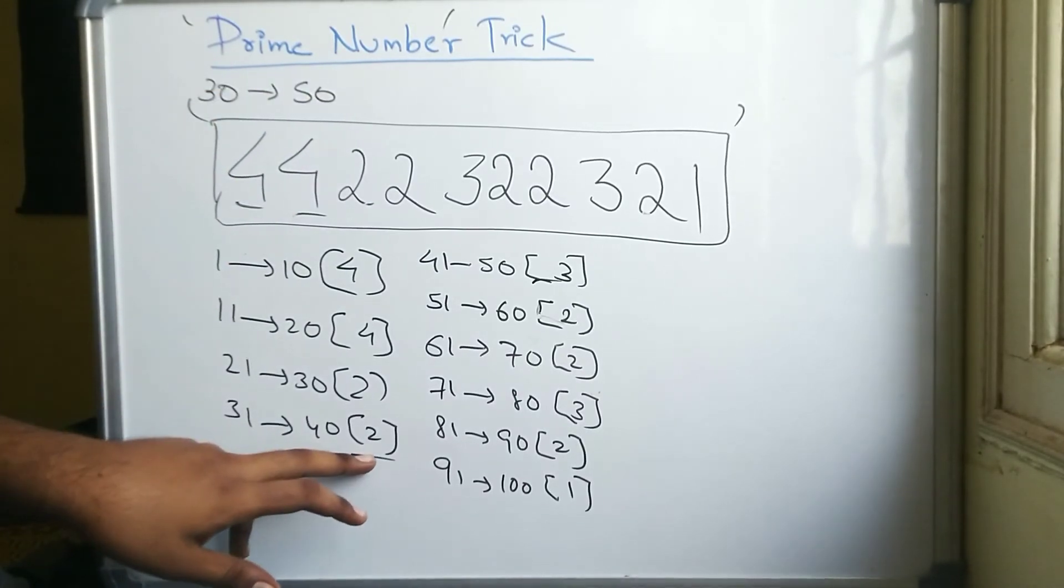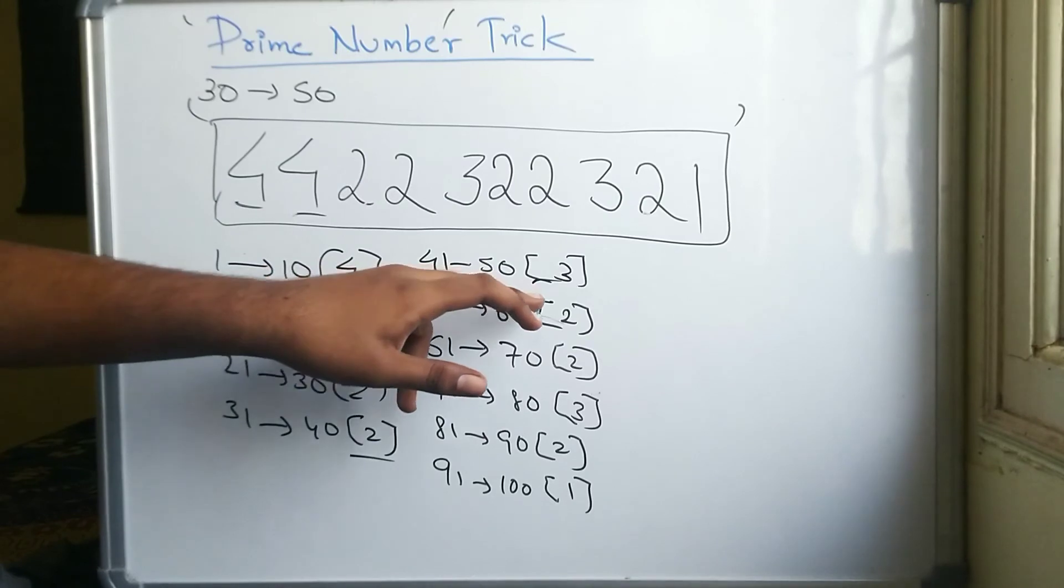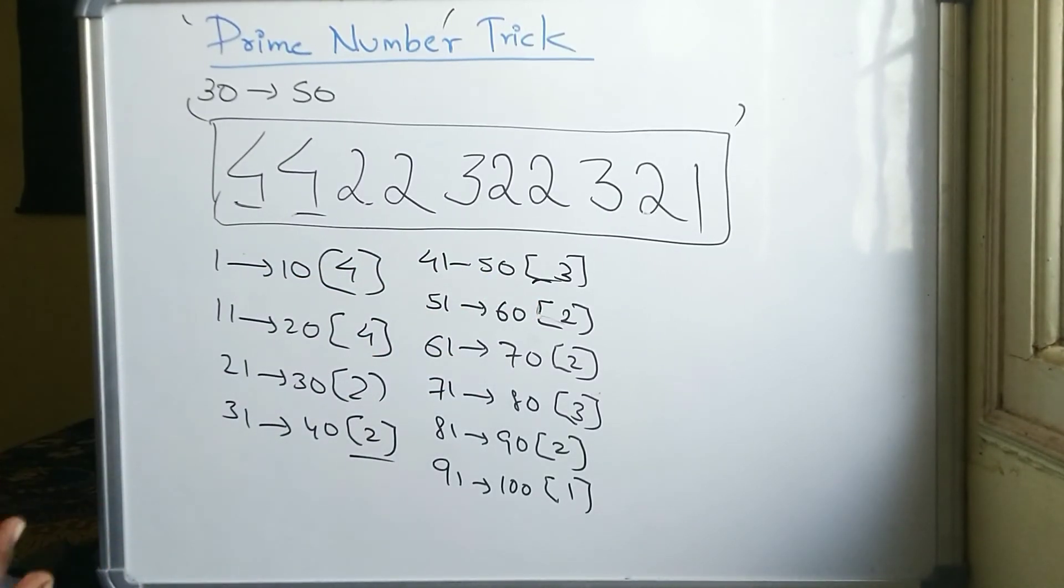31 to 40, how much is it? 41 to 50 is 3. 2 plus 3 is 5, so that's all.